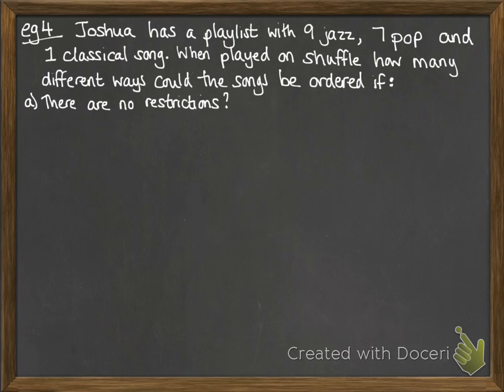Last one for this video. Joshua has a playlist with 9 jazz, 7 pop, and 1 classical song. He's playing it on shuffle and trying to figure out different ways it could be ordered. First of all, with no restrictions at all, if all those songs could be played in any order, how many different orders could we have? There are 17 songs altogether, and that's 17 factorial, which goes to 3.56 times 10 to the 14. Pretty huge. Just think about that when you're shuffling your playlists next.